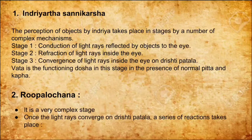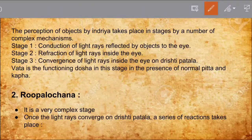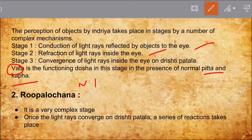The first stage is Indriya Artha Sannikarsha — the perception of objects by the Indriya. It involves a number of complex mechanisms. In stage 1, conduction of light is reflected by the object to the eye. In stage 2, refraction of light takes place inside the eye. In stage 3, convergence of light occurs inside the eye on the Drushtipatala. Vata is the functioning dosha in this stage, with Pitta and Kapha present in normal levels.